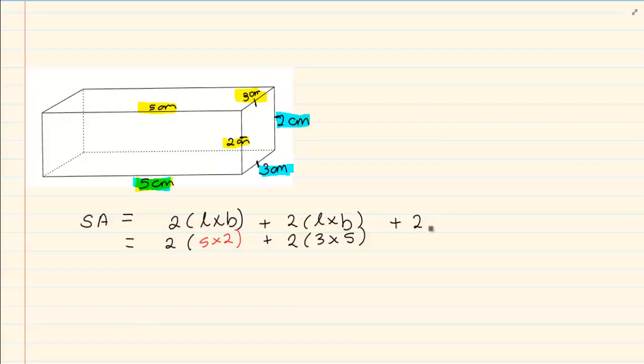Then we are doing the last one. It will be the one on the right and the one on the left. Now what is the area of that specific shape? It will also be two times length times breadth and if we look at the values it is three times two.